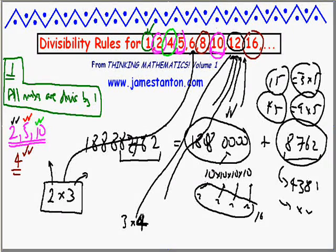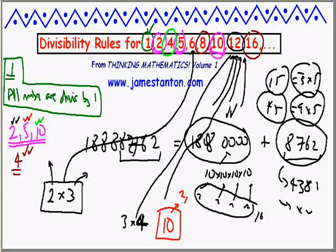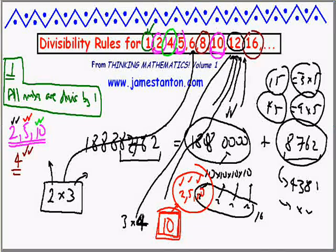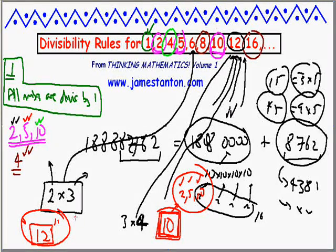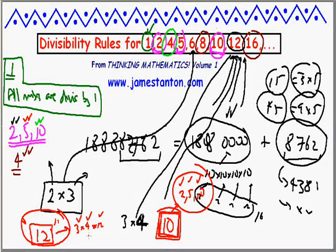We've now captured all divisibility rules for all numbers through these videos. One important note: all of this is based on base 10. The fact that 10 is divisible by 2, 5, and 10 made the rules for those numbers special. Martians, who have six fingers on each hand, use base 12 for their number system. So my puzzle: what would the divisibility rules look like if all numbers were written in base 12? Given that 12 equals 3 times 4, the divisibility rules for 3, 4, and 12 would be very nice — but how would you tell if a number is divisible by 5 in base 12? That's the real puzzle.